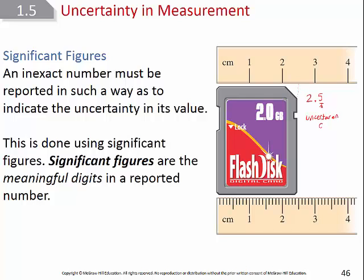With the first ruler, the flash drive is definitely at least two centimeters. The two is not estimated. I don't have a graduation for tenths, but I can estimate: it looks about halfway between two and three, so I estimate the tenths place as 5. This estimated digit is called the uncertain digit. Students sometimes think an uncertain digit isn't significant — that is not true. It is still a meaningful digit. So 2.5 centimeters has two significant figures.